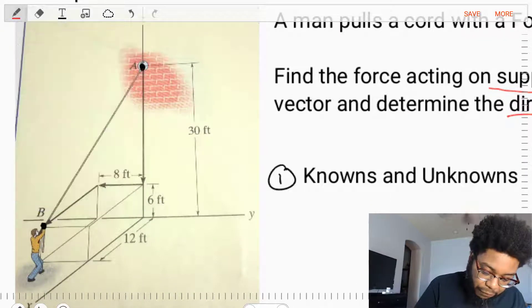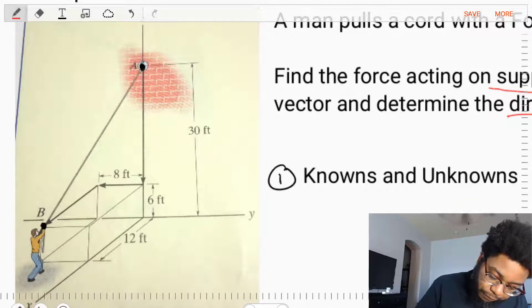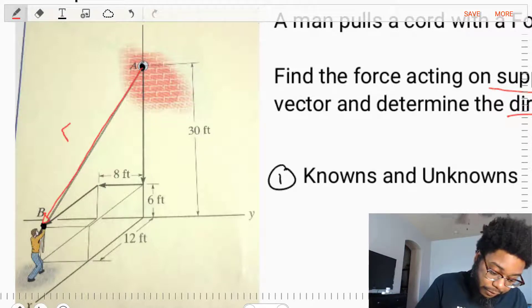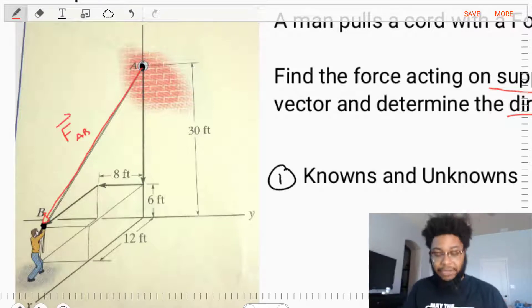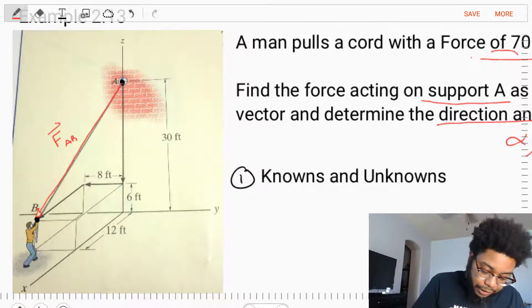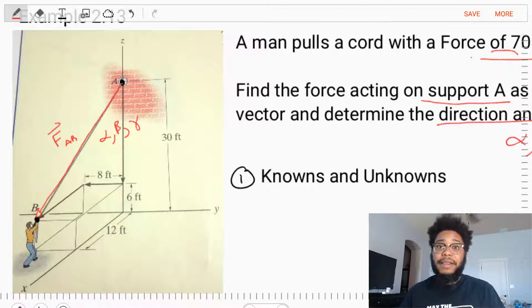So we need to find the force that is coming out of point A and directed towards B. We'll call this force AB, force A, from A towards B. We need to find this force vector and we also need to find the angles alpha, beta, and gamma for that vector.